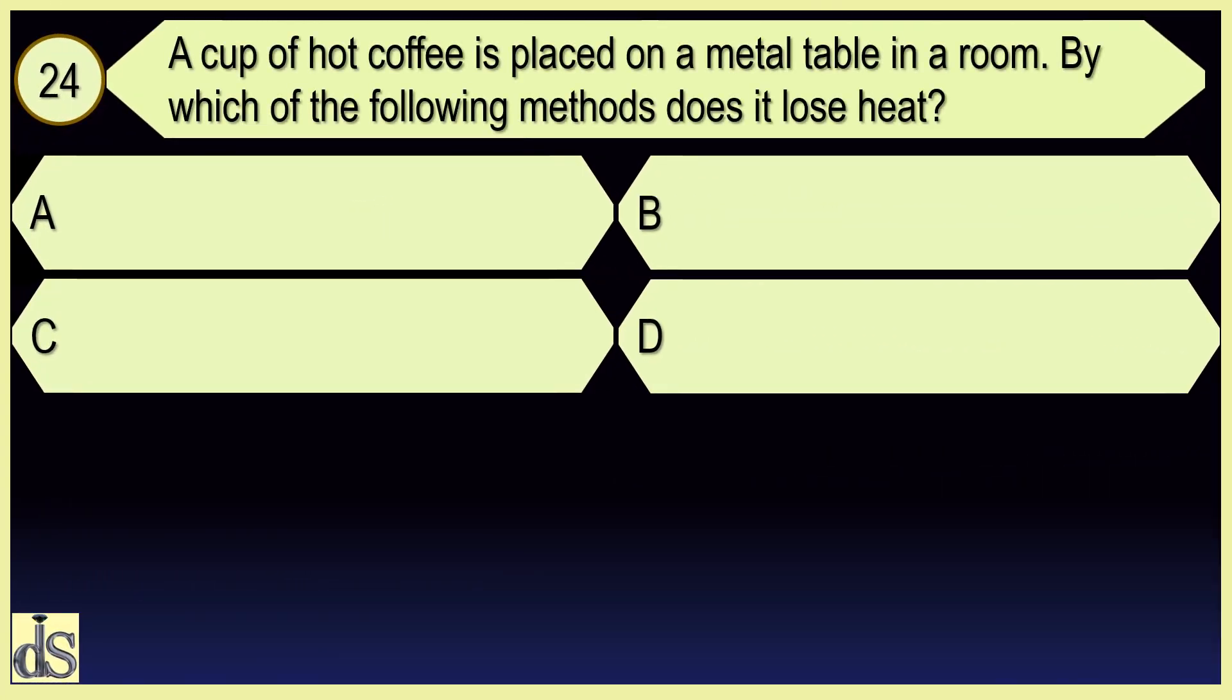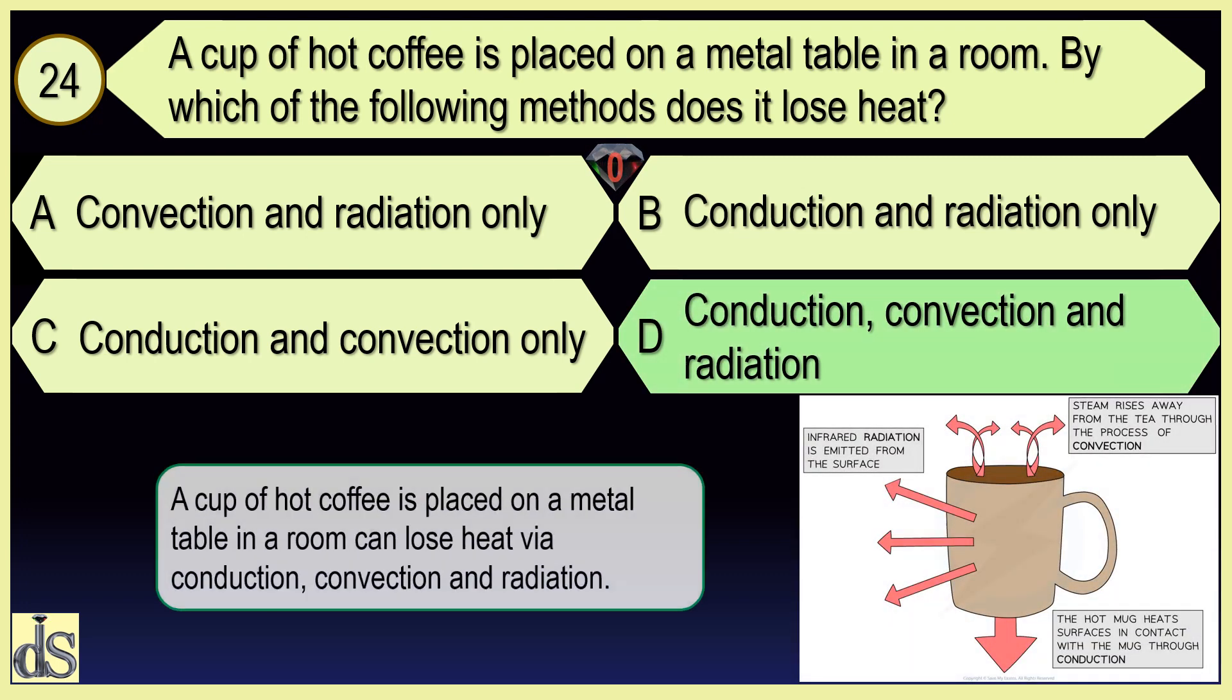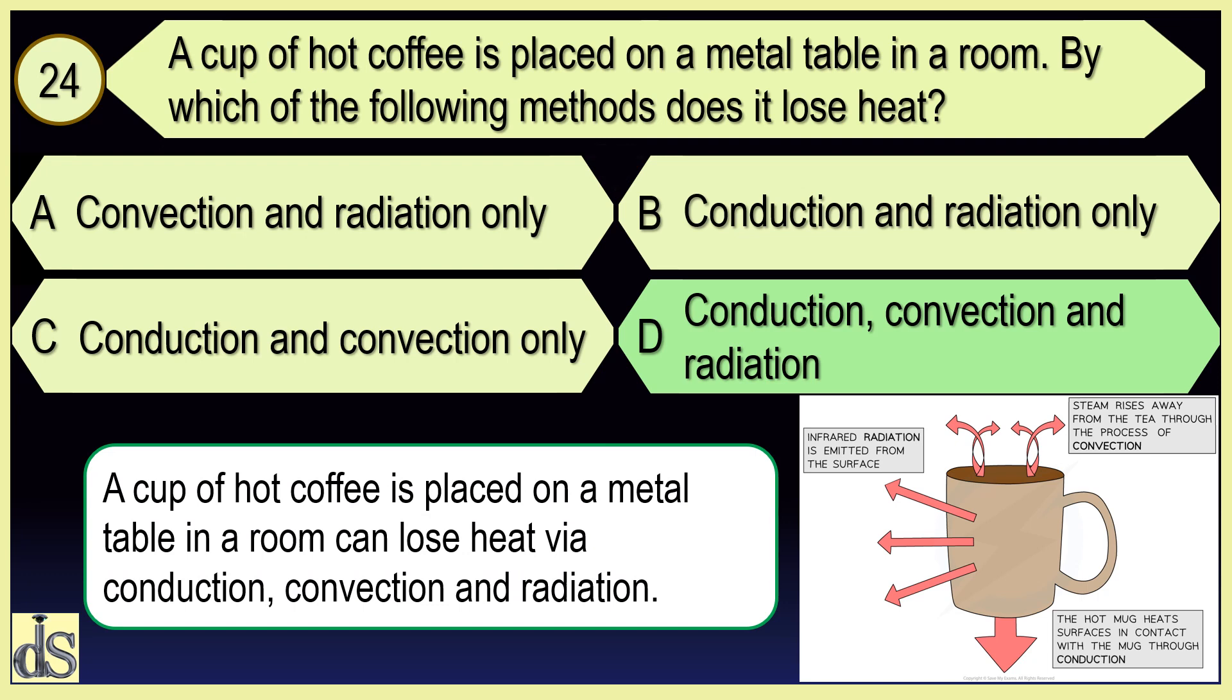A cup of hot coffee is placed on a metal table in a room. By which of the following methods does it lose heat? Conduction, convection, and radiation.